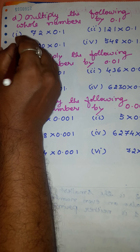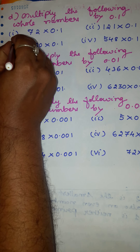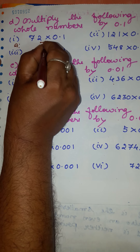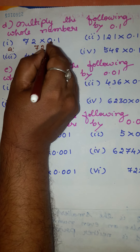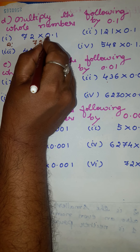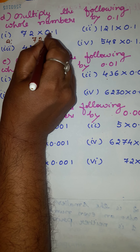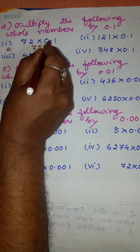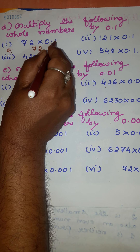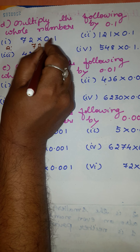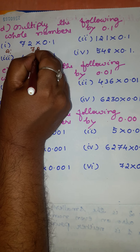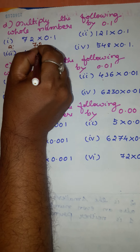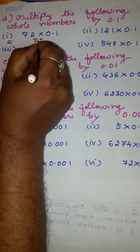First example: write this number as it is — 72. Here in 0.1 you have one decimal place after the decimal point. So here you have to move only one place from right to left. The answer is 7.2.